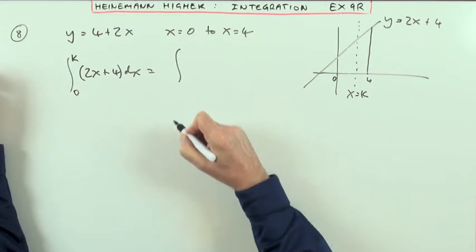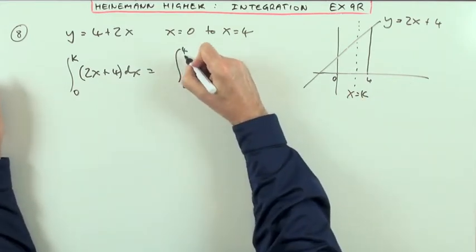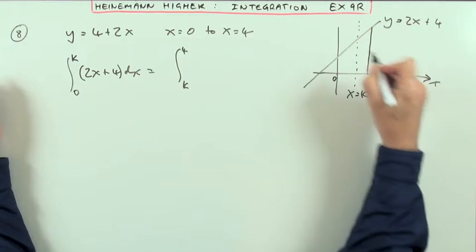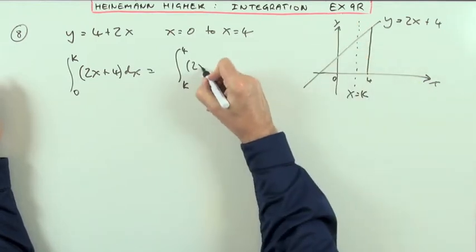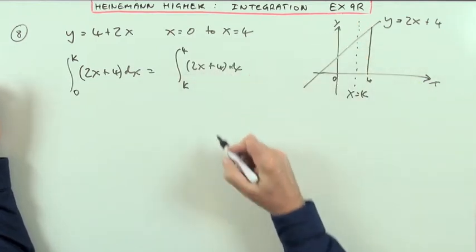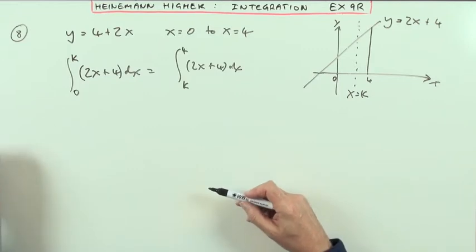should equal the area on the opposite side, going from k onwards to 4, of 2x plus 4 dx. The area should be the same on either side for it to be equal.